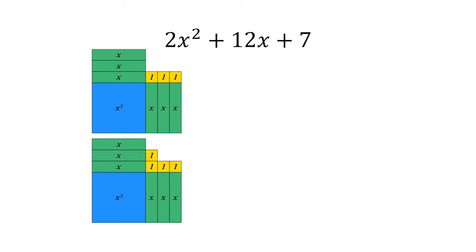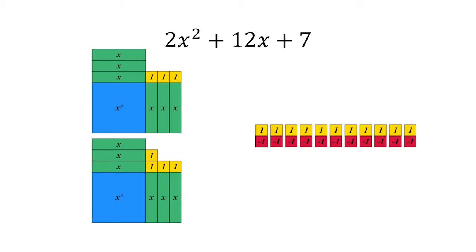We introduce eleven zero pairs, which gives us eleven yellow tiles with which to complete the squares, leaving us eleven negative one tiles left over.